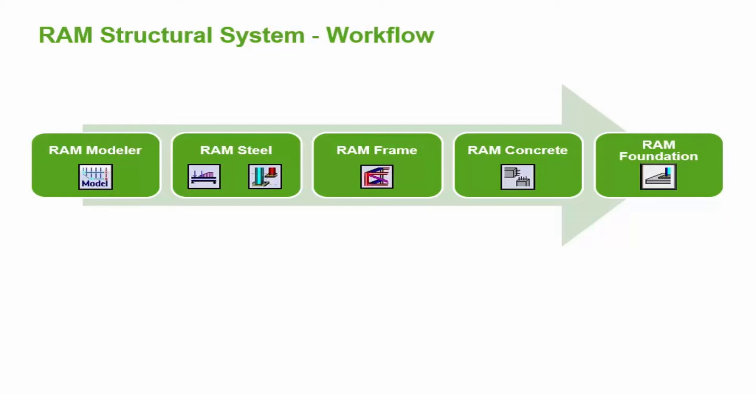All building models are created in the RAM Modeler, which contains a three-dimensional model of the structure, including all members, loading information, slab and deck assignments, and story data. Then the gravity steel members are designed in the RAM Steel Beam and RAM Steel Column Design modules.